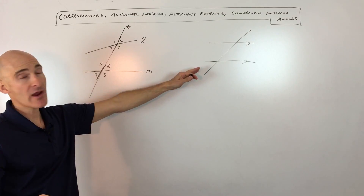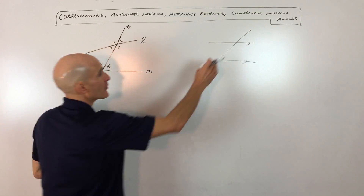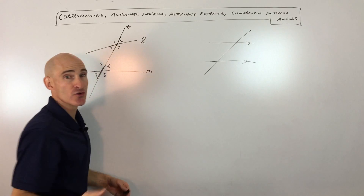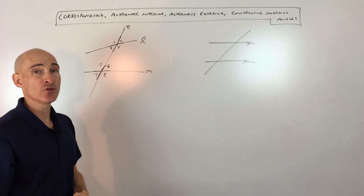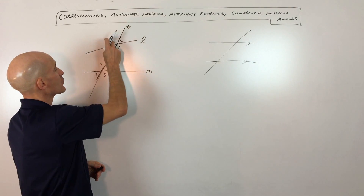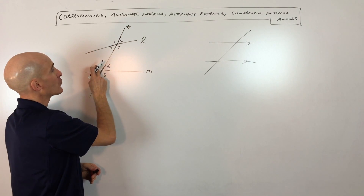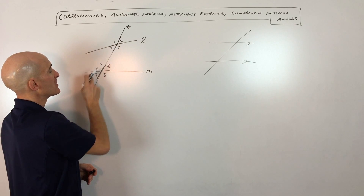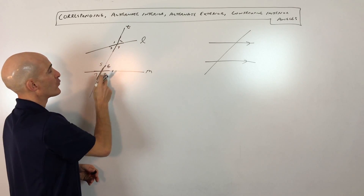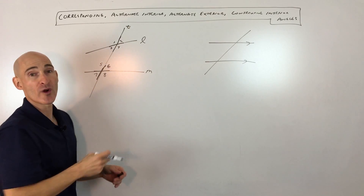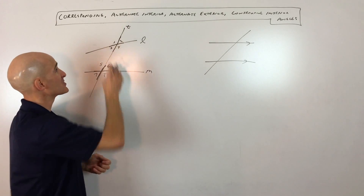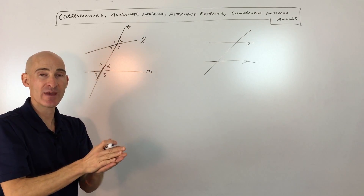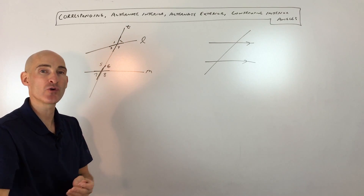Now when the lines are parallel, the corresponding angles — upper right, upper right — those are going to be congruent, equal to one another. Same thing here: 1 and 5 are corresponding — upper left, upper left. 3 and 7 — lower left, lower left. 4 and 8 — lower right, lower right. Just think about picking up that X and placing it on that X. The angles that match up, those are called corresponding.